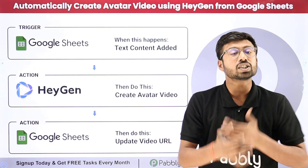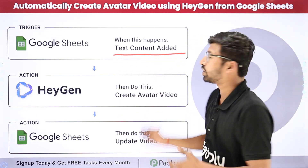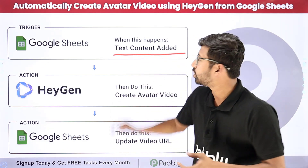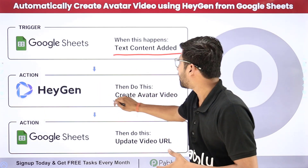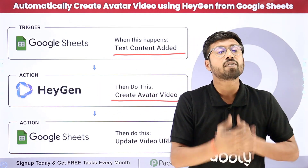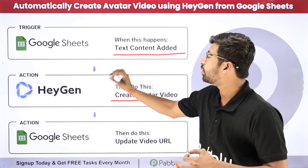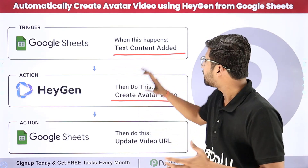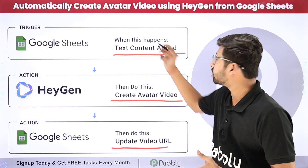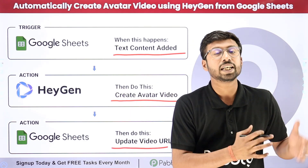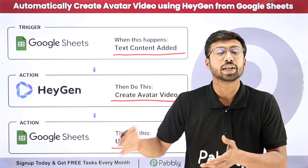In this automation, we just add the text content of the video in our Google Spreadsheet. Using Pably Connect automation, we send the same text content to HeyGen and create an avatar video. After creating the avatar video using HeyGen, we update the link of the created video back into the same Google Sheet. In this way, the team just adds the text and within a few minutes, the video is ready to be sent.